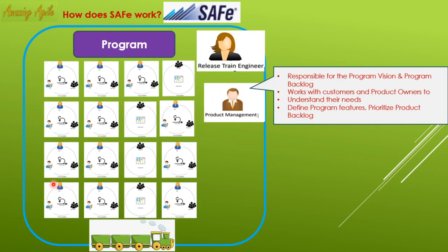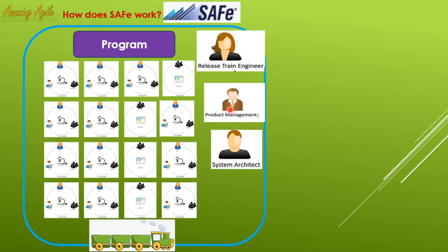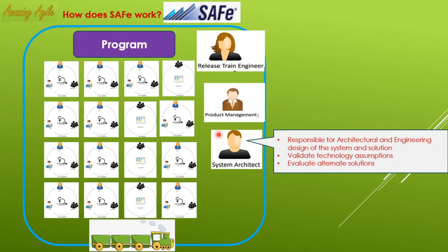Individual project product owners clarify requirements from Product Management. The next role is System Architect — a chief architect who manages all development and design activities across teams through design thinking. All development teams discuss with the System Architect. Responsibilities include architecture and engineering design of the system and solution, validating technology assumptions, and evaluating alternate solutions so that if the initial design fails, there is an alternative ready.